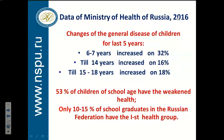At 14 years, two-thirds of Russian children already have chronic diseases. Half have disorders in the cardiovascular and respiratory systems. Up to 40% of recruits are not able to fulfill the minimum standards for the physical training of military personnel.